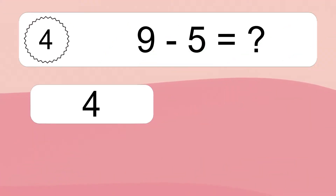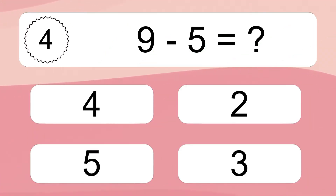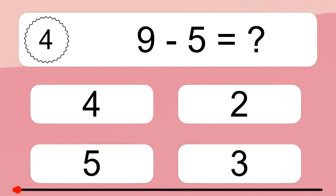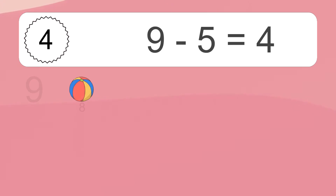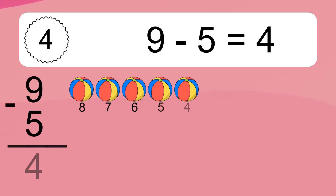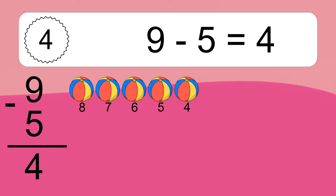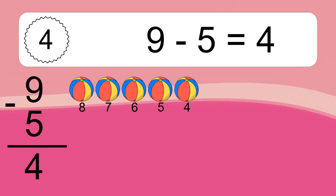9 minus 5 equals what? 9 minus 5 equals 4. Let's count it. 8, 7, 6, 5, 4.